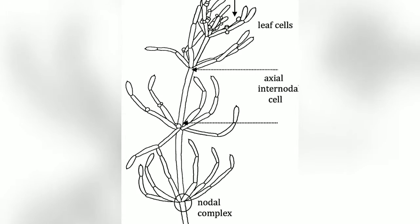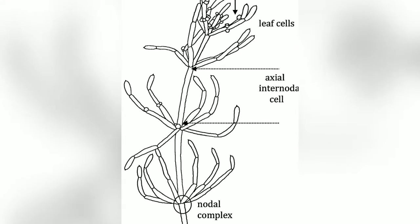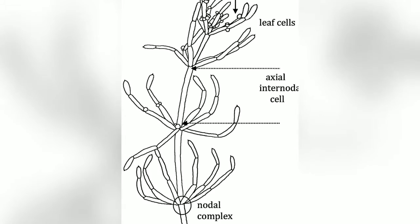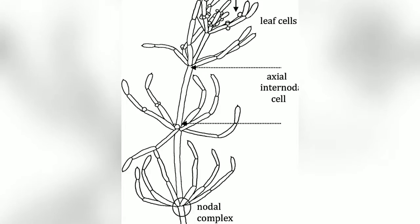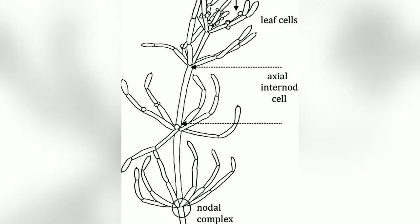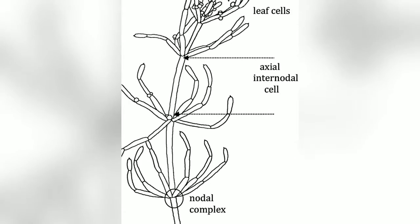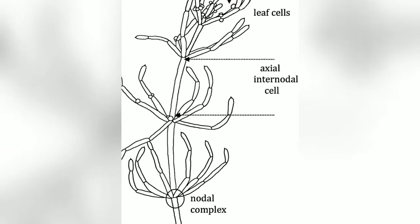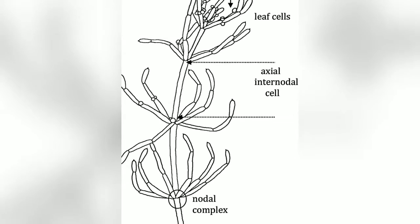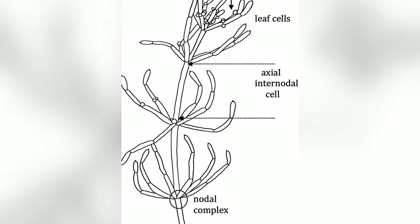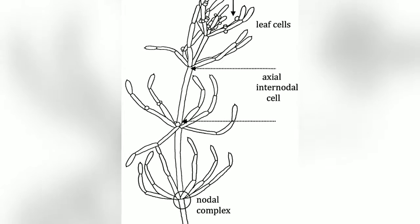Hello students, today we will start with cell structure of Chara. Nodal cells of Chara are uninucleate and densely cytoplasmic with few small ellipsoidal chloroplasts.